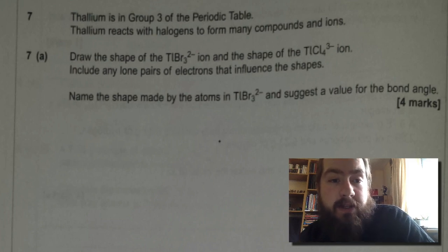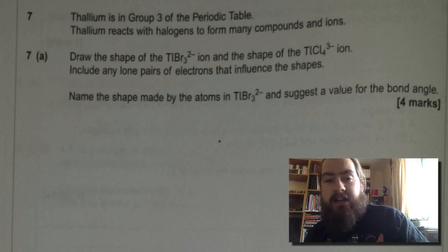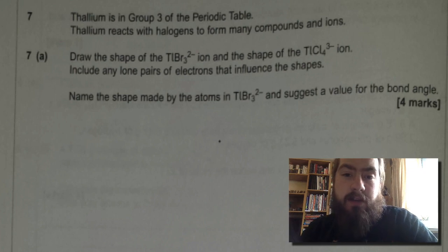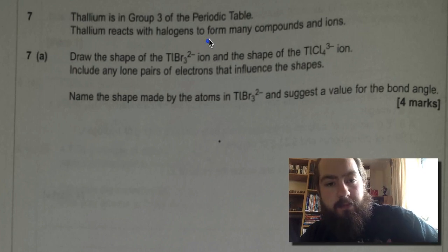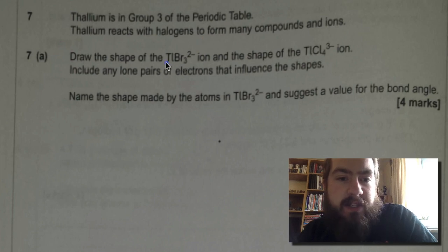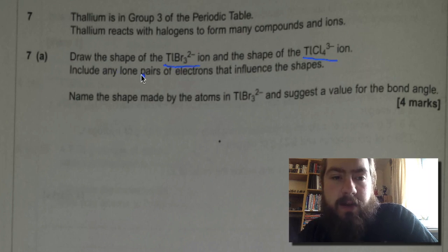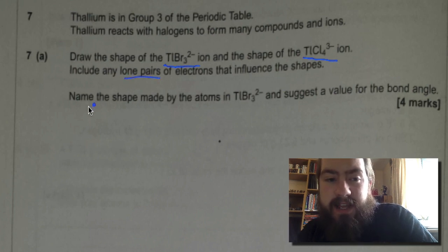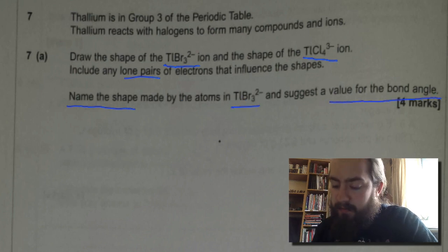Thallium is in group 3 of the periodic table. Thallium reacts with halogens to form many compounds and ions. Draw the shape of the TlBr thallium bromide ion and the shape of the thallium chloride ion. Include any lone pairs of electrons that influence the shape. You then need to name the shape made by thallium bromide and suggest a value for the bond angle of thallium bromide. It's worth 4 marks.